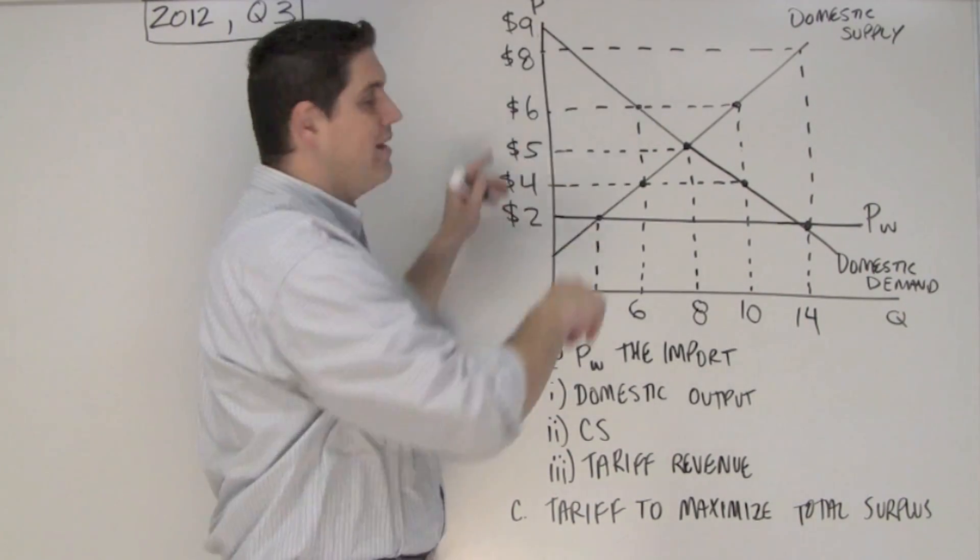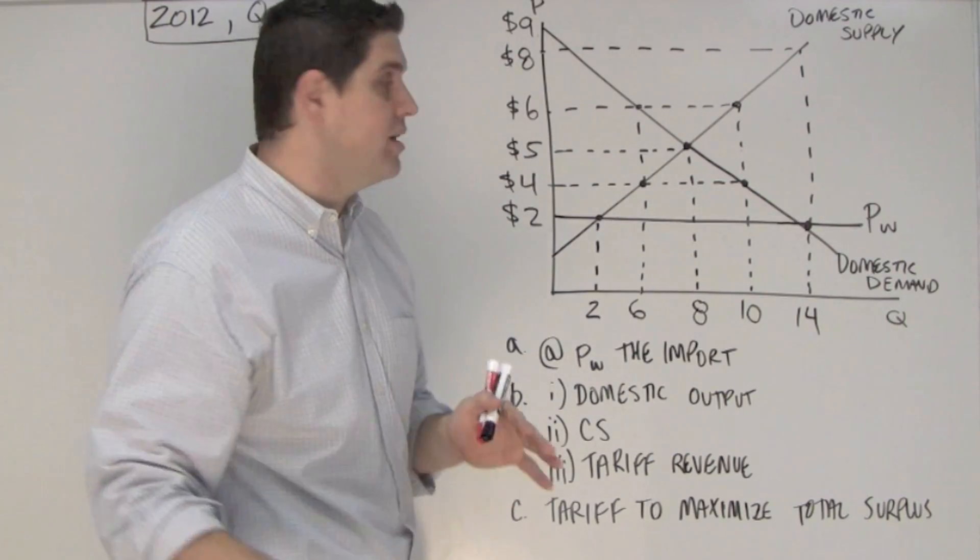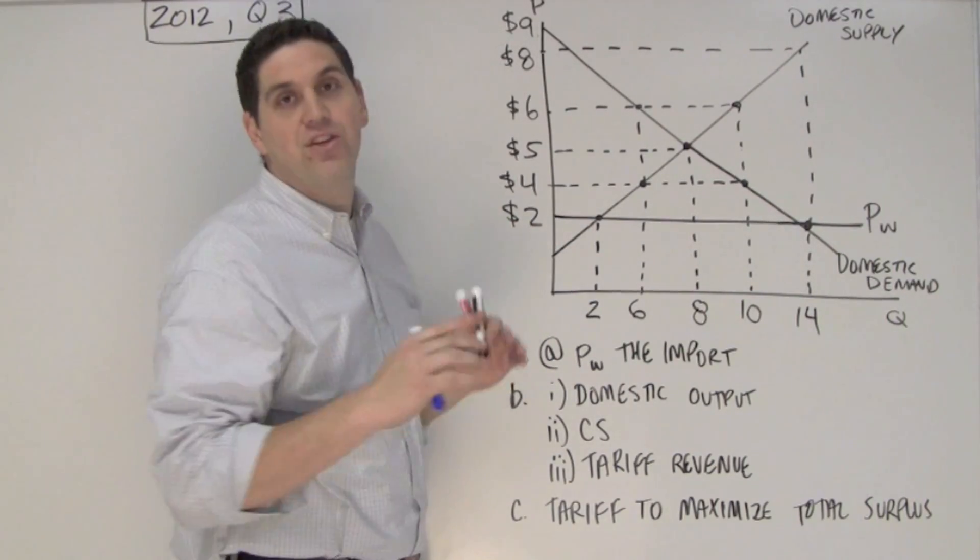The question gives you the domestic supply and domestic demand for sugar, and it also says that there's open trade between countries, and the world price is right here at 2, PW.